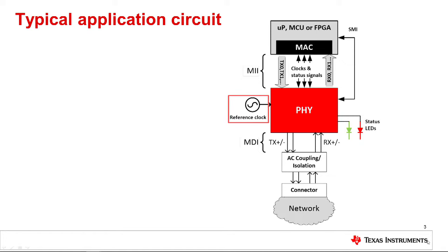The PHY requires an external clock source, which can be either a 25 MHz crystal or a 25 MHz clock supplied from another device. Both of these must meet a minimum frequency accuracy of plus or minus 100 ppm, accounting for all error sources. Some details on clocking, XMII, SMI, and MDI will be covered in other Precision Labs sessions about Ethernet.